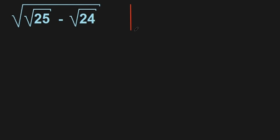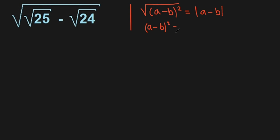For example, let's write two formulas we know. The square root of (a minus b) squared equals the absolute value of (a minus b). And (a minus b) squared equals a squared minus 2ab plus b squared.